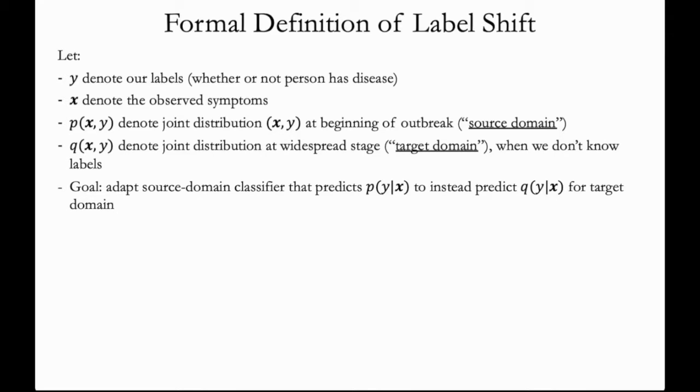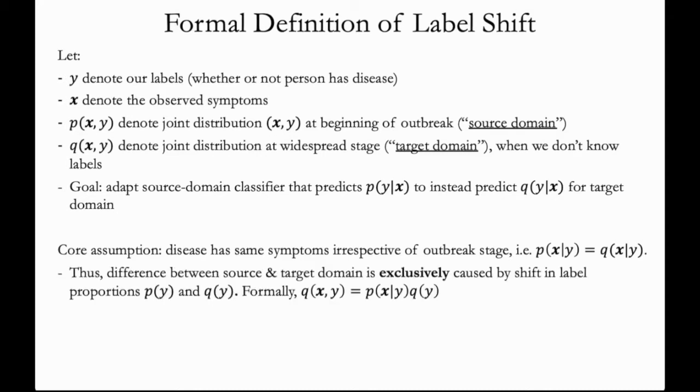The goal is to adapt a source domain classifier that predicts p(y|x) to instead predict q(y|x) for the target domain. The core assumption of label shift is that the disease has the same symptoms irrespective of the outbreak stage. That is, p(x|y) is the same as q(x|y). Thus, the difference between the source and target domains is exclusively due to a shift in the label proportions p(y) and q(y).